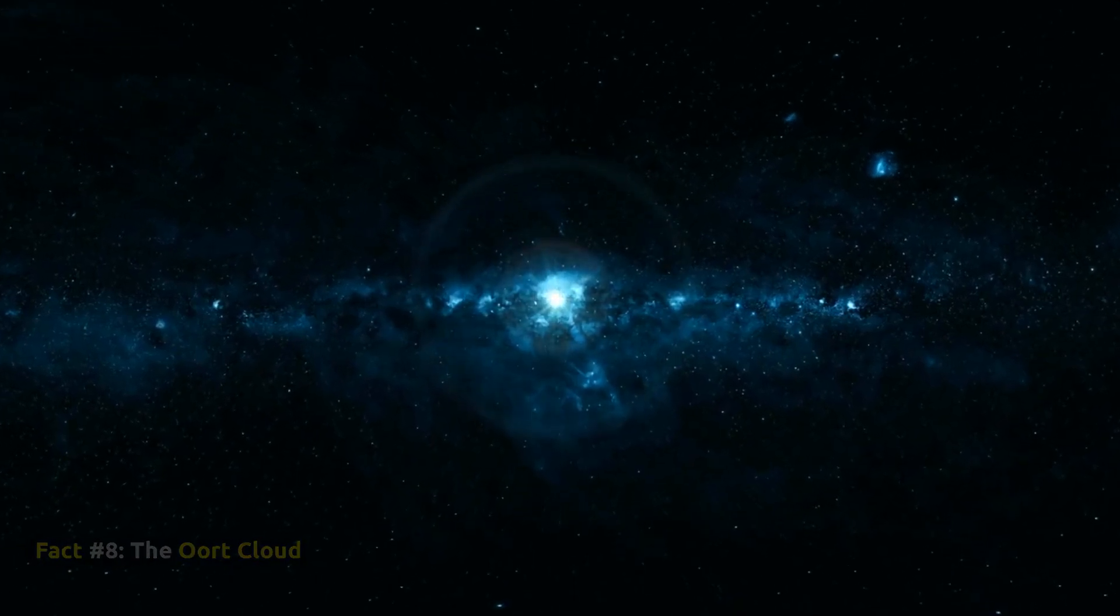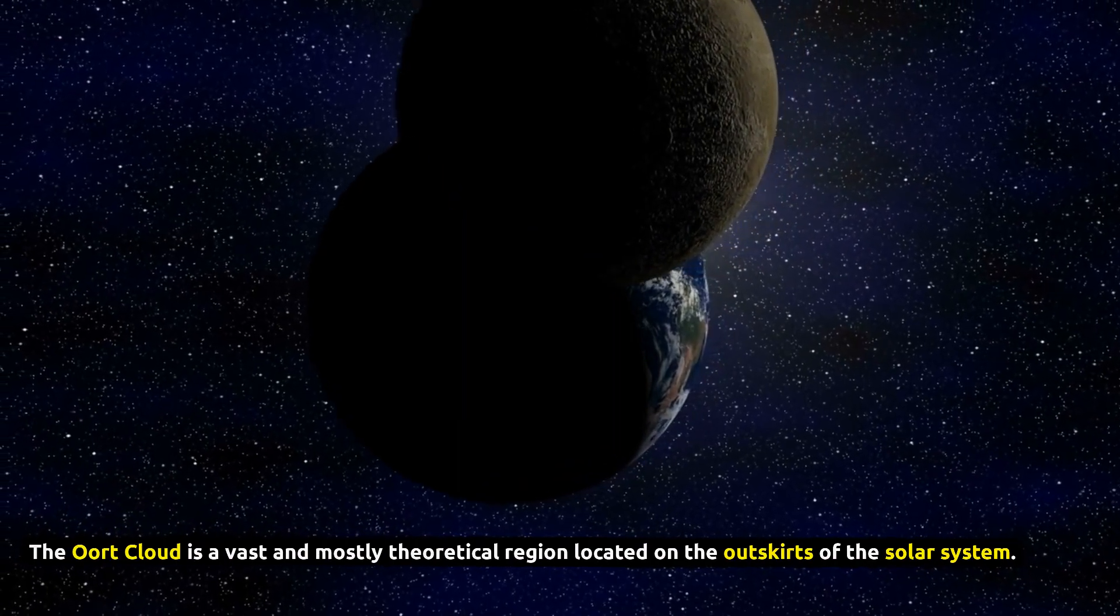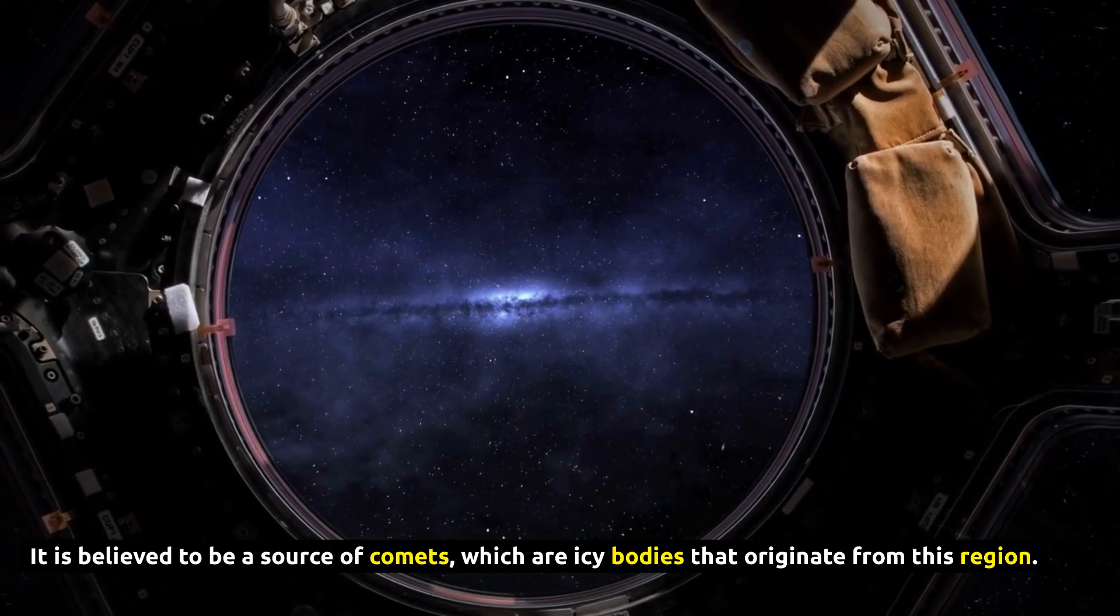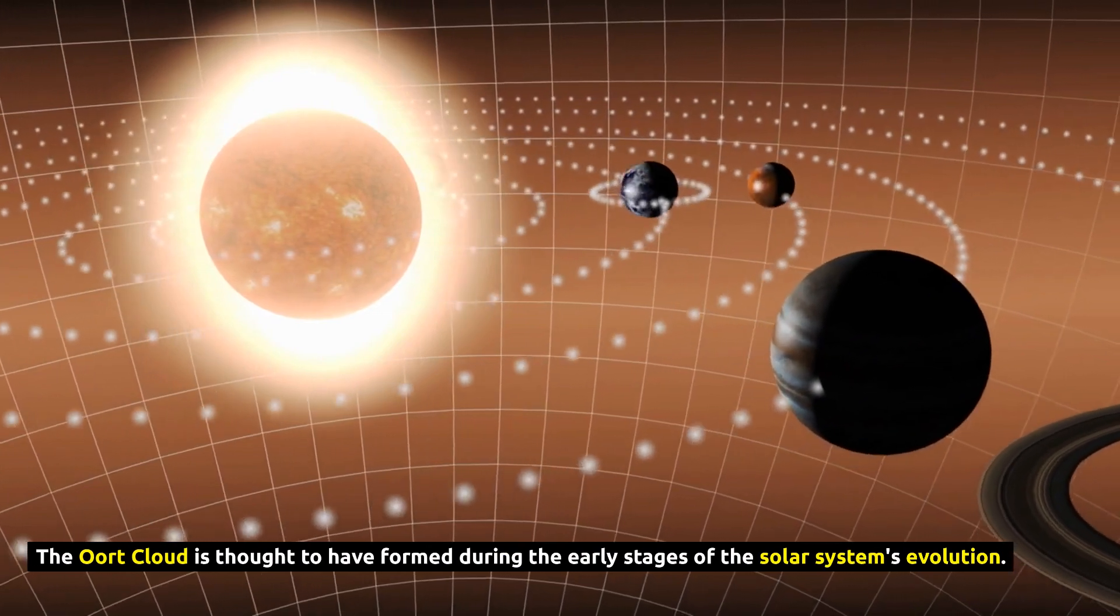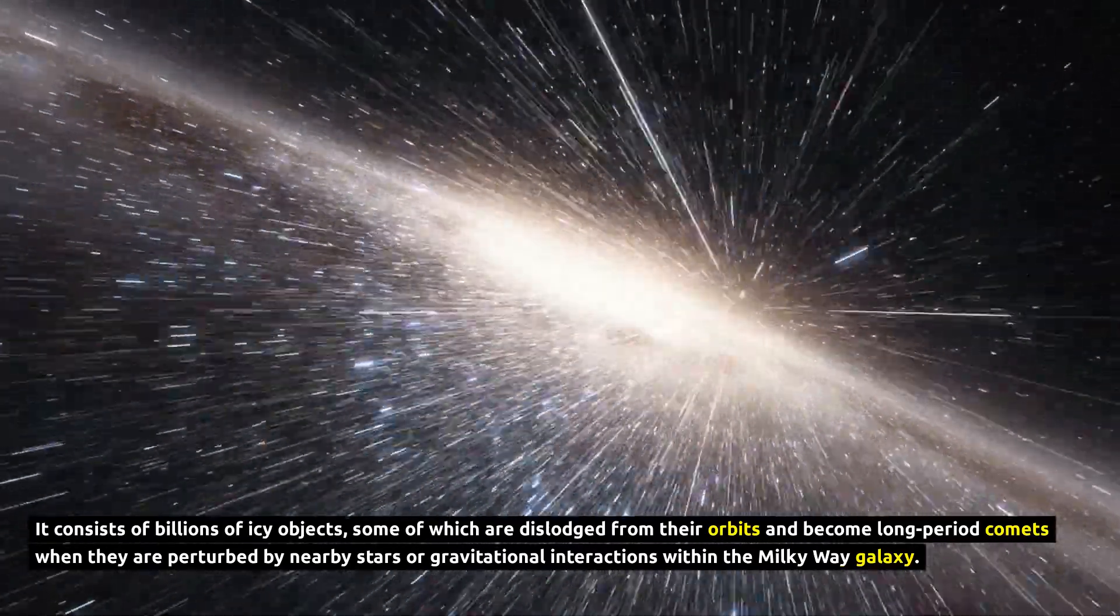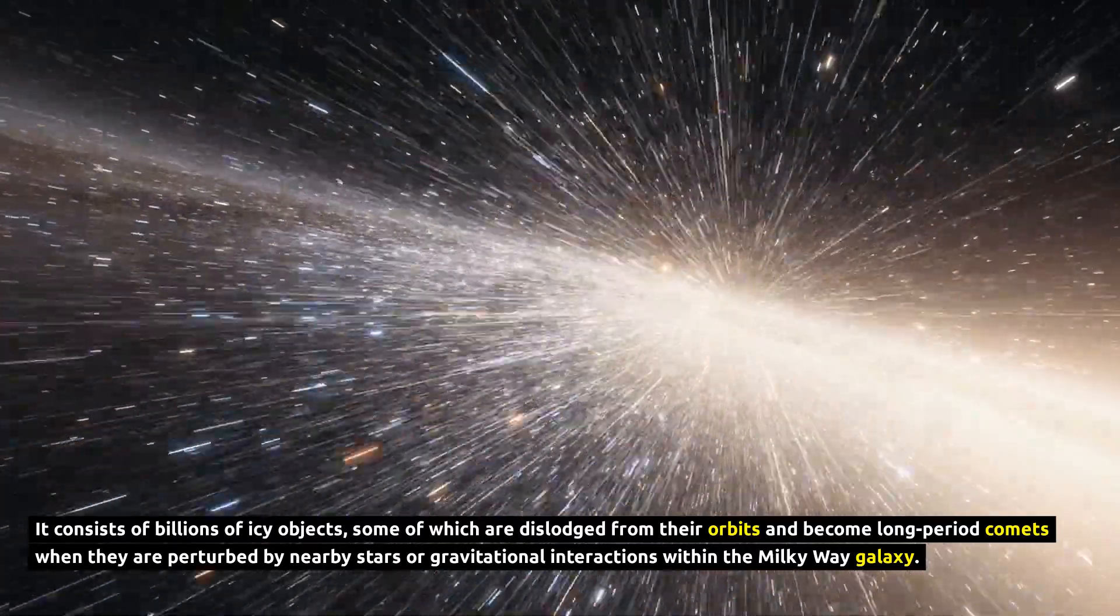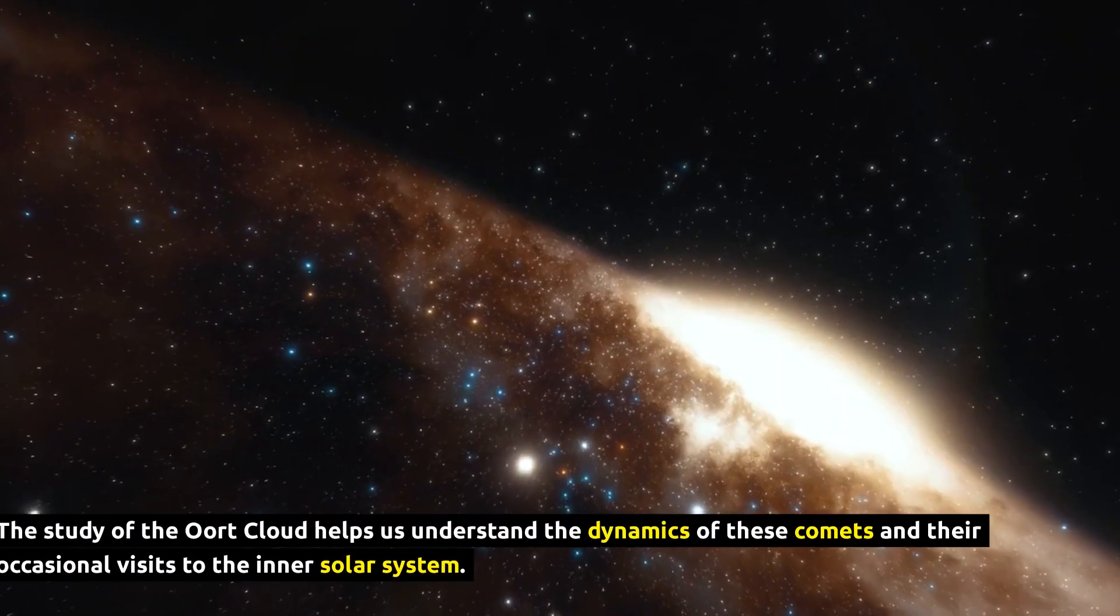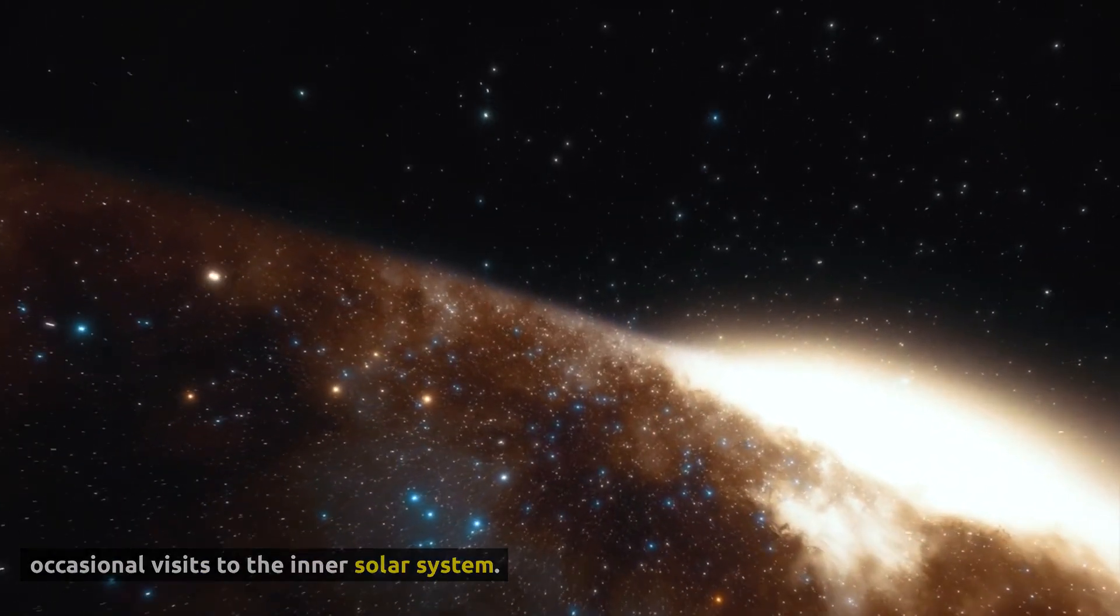Fact number 8, The Oort Cloud. The Oort Cloud is a vast and mostly theoretical region located on the outskirts of the solar system. It is believed to be a source of comets, which are icy bodies that originate from this region. The Oort Cloud is thought to have formed during the early stages of the solar system's evolution. It consists of billions of icy objects, some of which are dislodged from their orbits and become long-period comets when they are perturbed by nearby stars or gravitational interactions within the Milky Way galaxy. The study of the Oort Cloud helps us understand the dynamics of these comets and their occasional visits to the inner solar system.